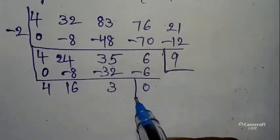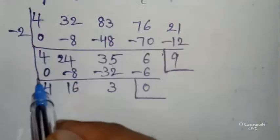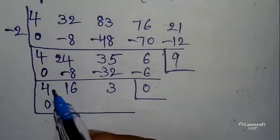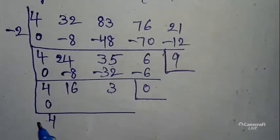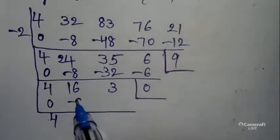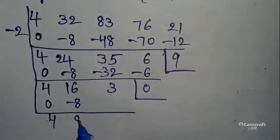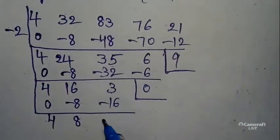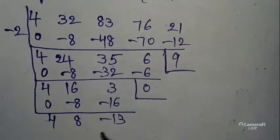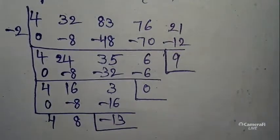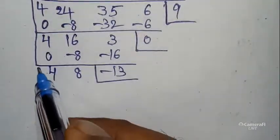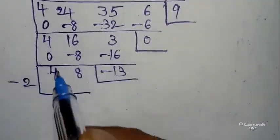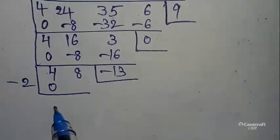So leave this value and take a box. First value 0 + 4 = 4. 4 × -2 = -8. 16 - 8 = 8. 8 × -2 = -16. 3 - 16 = -13.